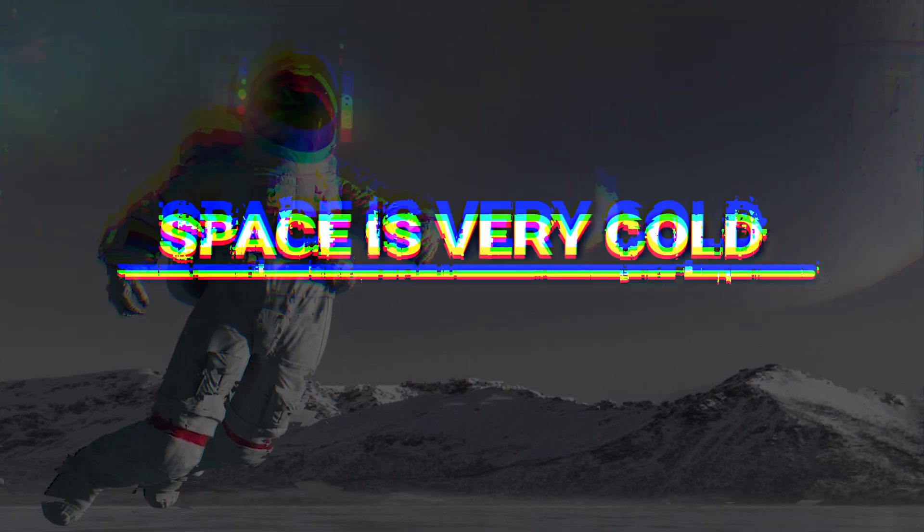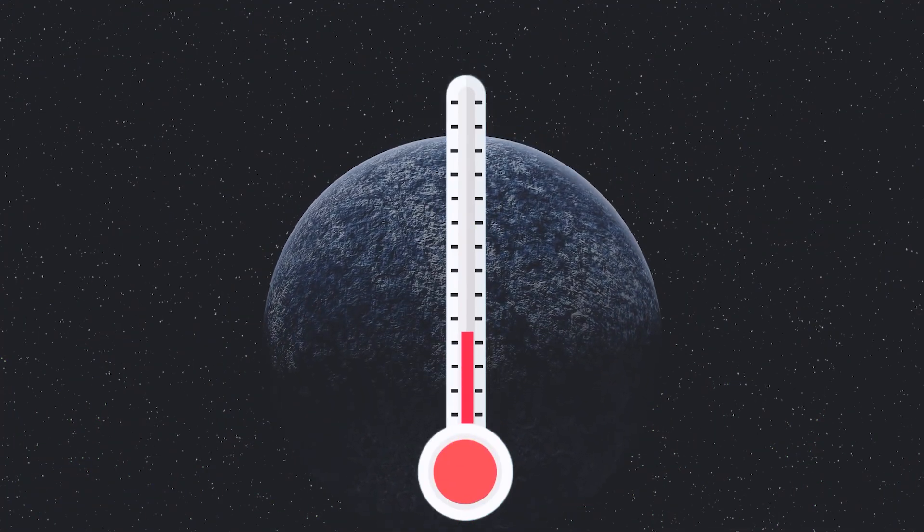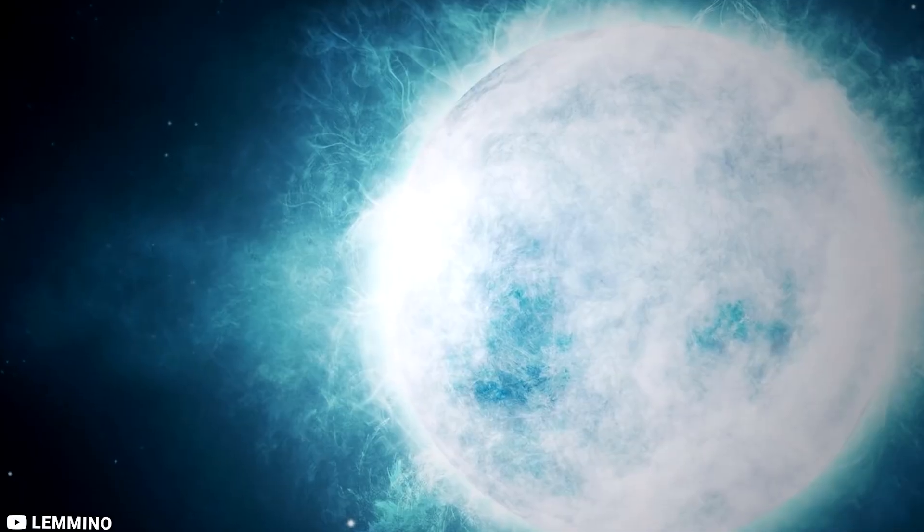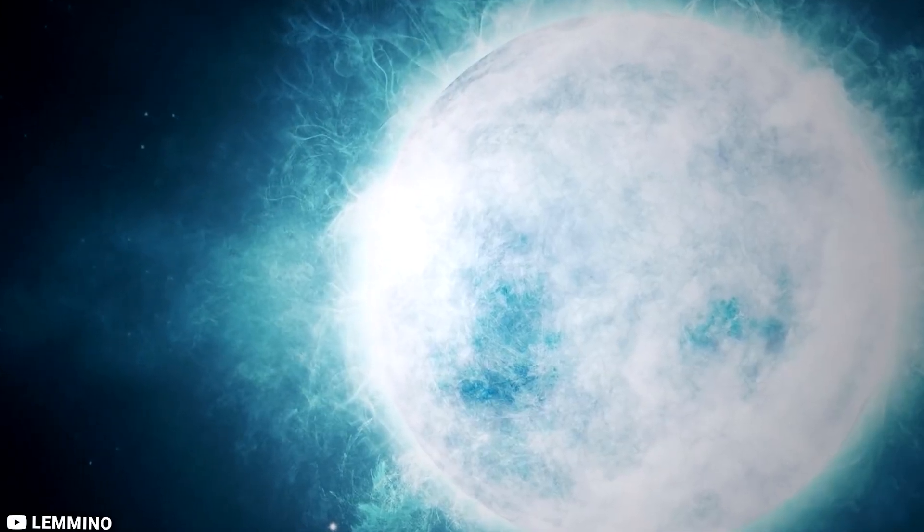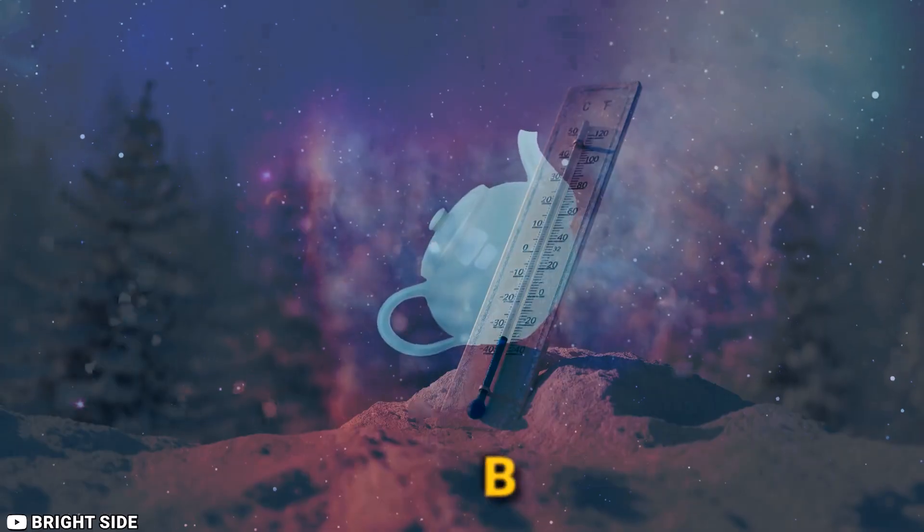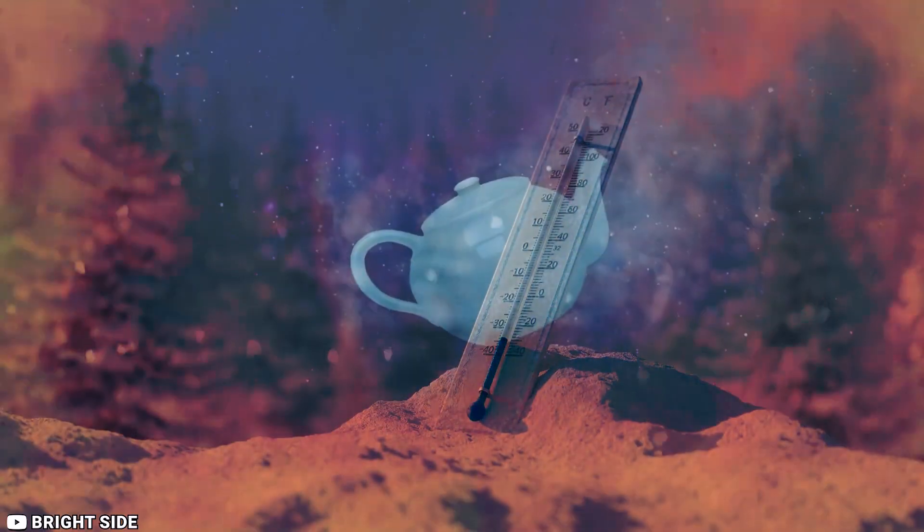Space is very cold. The average temperature of space is -270.45 degrees Celsius. That's cold enough to freeze solid nitrogen and oxygen. The coldest place in the known universe is the Boomerang Nebula, which has a temperature of -272.15 degrees Celsius.